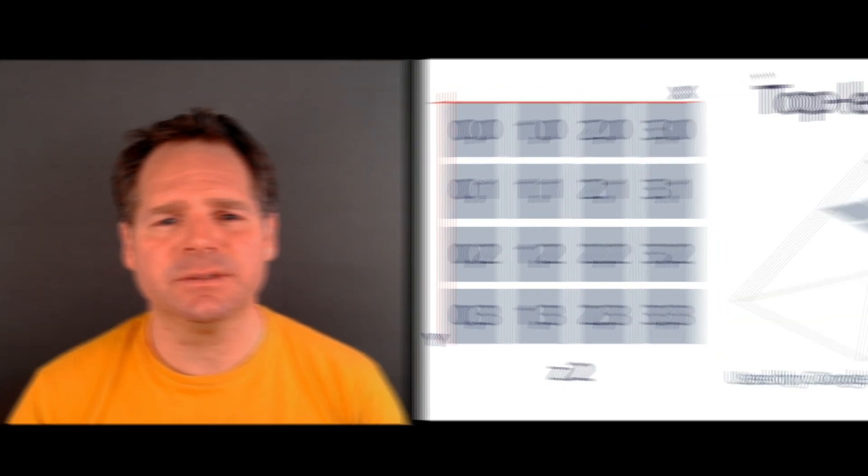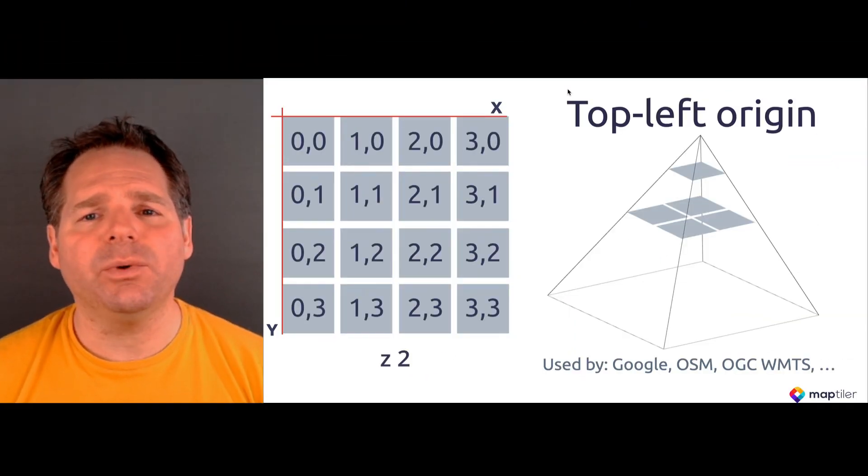In the video about Zoom Levels, we talked about why we need tiles, and how to address them. Each tile has three coordinates, X, Y and Z. Z is the zoom level, for example Zoom 2, and X and Y give us the position of the tile in this zoom level.